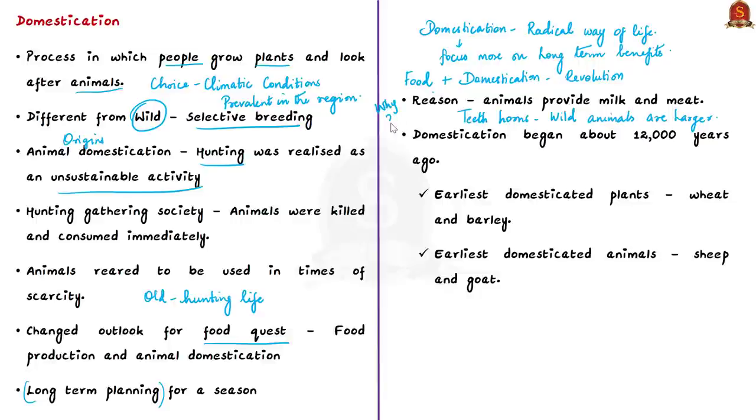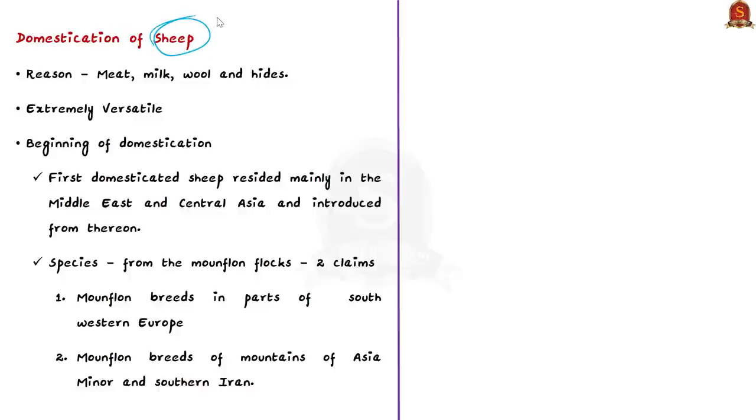When you take animals, domestication is generally done since they provide milk, which is an important source of food, and meat. While learning sixth standard history NCERT, you might have come across the concept of domestication. According to NCERT, domestication began about 12,000 years ago. Some of the earliest plants to be domesticated were wheat and barley, and the earliest domesticated animals include sheep and goat. Our focus today is on the domestication of sheep.